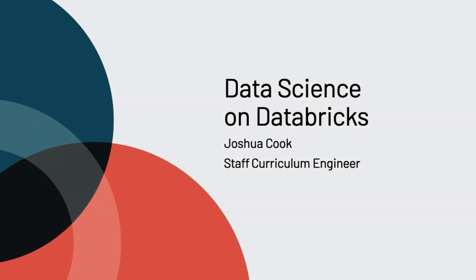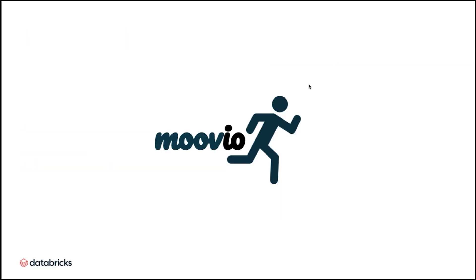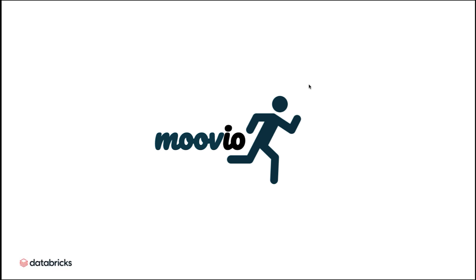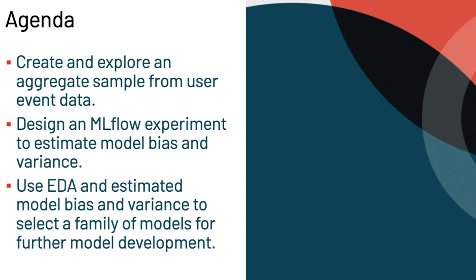Welcome to the session, Data Science on Databricks. In this session, we will model a data scientist's work at a fictional health tracking company called Muvio. We will create and explore an aggregate sample created from user event data. We will design an MLflow experiment to estimate the bias and variance of several models, and use EDA and estimated model bias and variance to select a family of models for further model development.